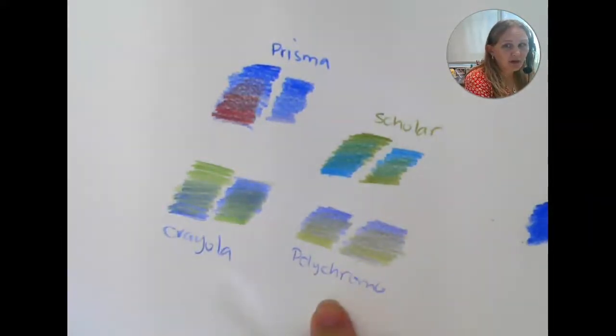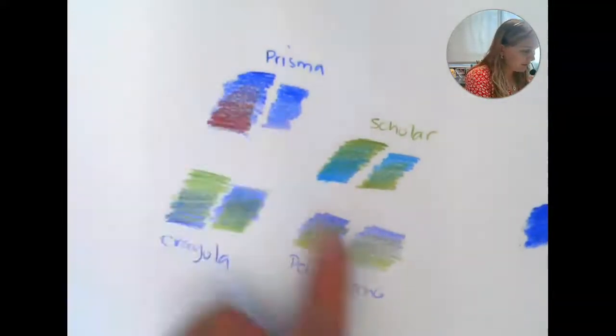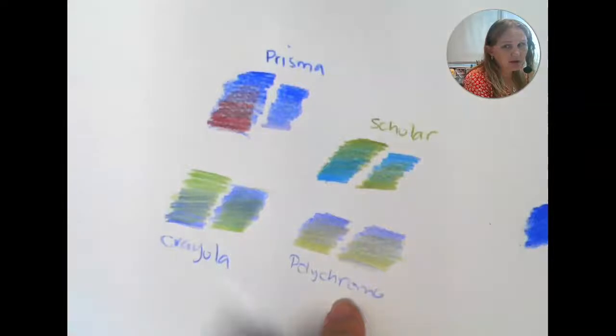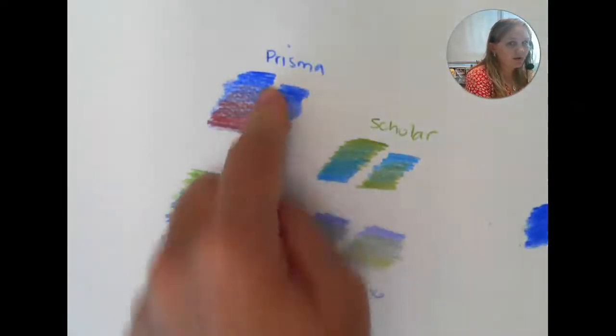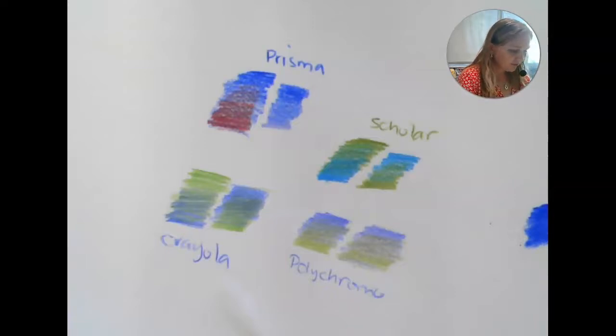As far as price, I should have done these in a better order. Crayola are your cheapest, then Scholar, then Prismacolor Premier, and then Polychromo. I will tell you that the price difference between Polychromo and even Prismacolor Scholar is pretty huge. These are very expensive pencils, but I had them sitting here so I thought I'd include it in the video. So I'm going to show you a couple of different ways for blending.